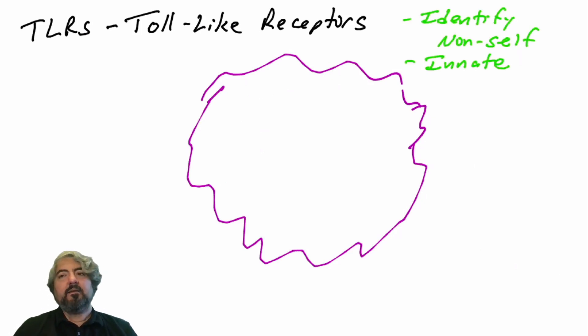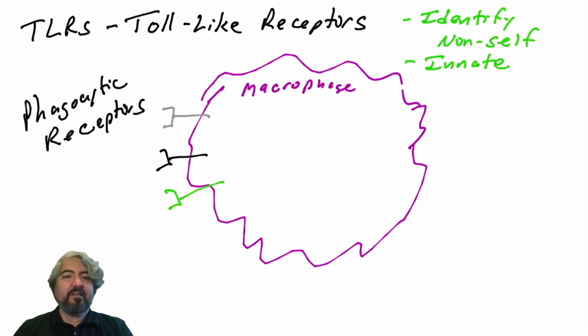In a previous video, we talked about macrophages and how macrophages have on their surface phagocytic receptors like the LPS receptor, the mannose receptor, and complement receptors. When these receptors engage their ligand found on the surface of the pathogens, that would trigger receptor-mediated endocytosis, also known as phagocytosis.